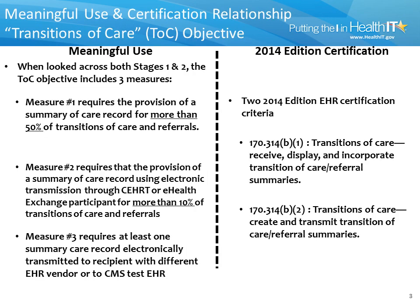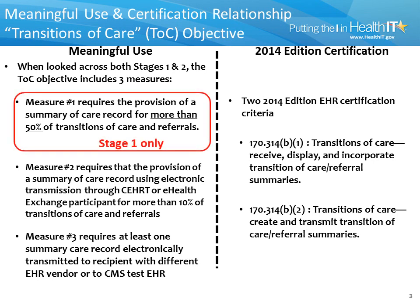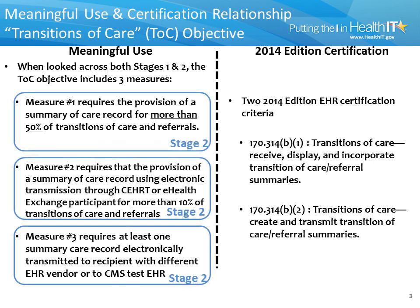This slide shows Meaningful Use Measures side-by-side with the supportive 2014 edition EHR Certification Criteria. On the left, inclusive of both Stages 1 and 2, there are three measures associated with the Transitions of Care objective. For Stage 1, only the first measure, outlined in red, is required. For Stage 2, all three measures, outlined in blue, need to be met by eligible providers. On the right are the two 2014 edition EHR Certification Criteria adopted to support Transitions of Care. This training module will use the second of these certification criteria in all of the examples that follow, because the Meaningful Use Measures for TOC focus on transmissions from the eligible providers to other parties.